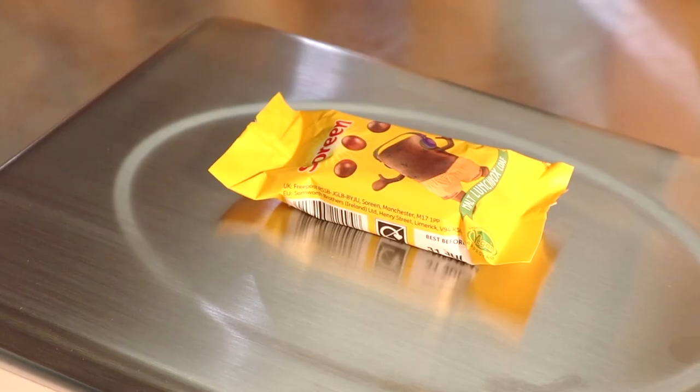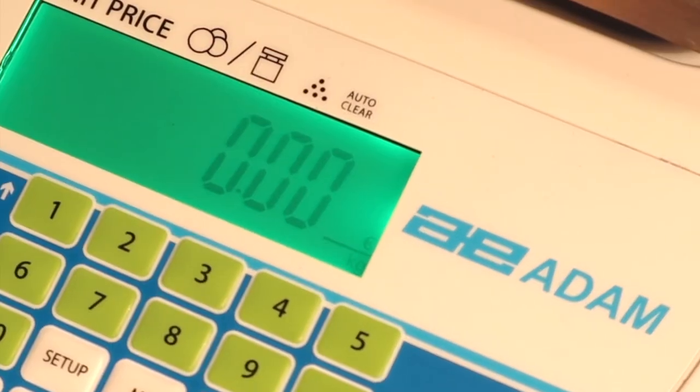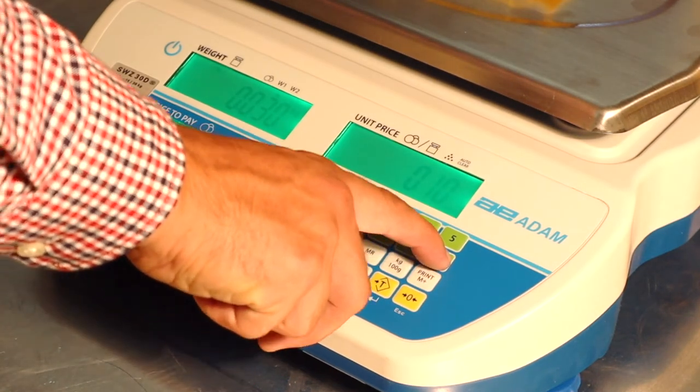To store the price of an item, press the Kilo 100g button. This allows you to toggle between setting price per kilo and price per 100g. You can then use the numeric keypad to enter the price per kilo or 100g for the item.